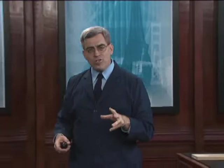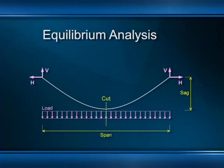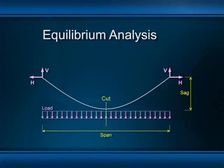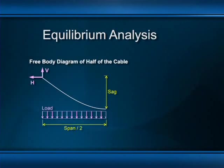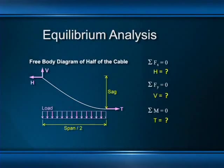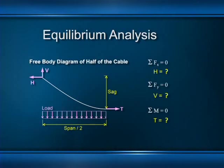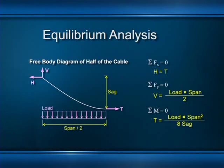To investigate the internal force in the cable we make a conceptual cut to expose those internal forces. The middle of the span is a particularly convenient location because the cable is perfectly horizontal at that point, so the internal tension force must also be perfectly horizontal. We draw a free body diagram of half the cable showing three unknown forces and three equations of equilibrium, and solve — I'll spare you the details and go directly to the solution.